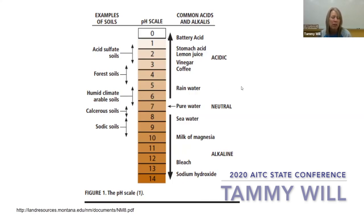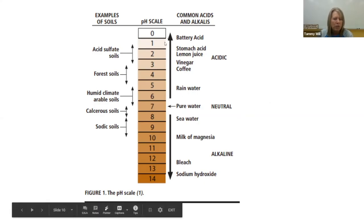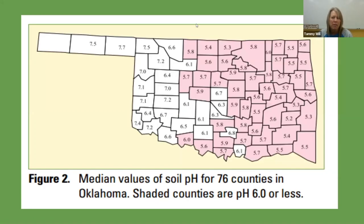I would ask students if they know what pH stands for. Not very often do I get a student who actually knows what the P and the H stands for in pH. pH stands for potential hydrogen, and we talk about that in terms of chemistry. We reinforce the numbers and what they mean, so as we do our experiment they will have that on their mind, because our experiment is going to deal with pH.